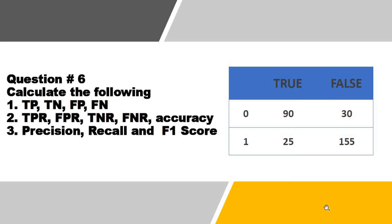After this, the last question of this video is: you have been given a confusion matrix, and you have to find out the true positive, true negative, false positive, false negative, followed by the accuracy, true positive rate, false positive rate, true negative rate, false negative rate, precision, recall, and F1 score.